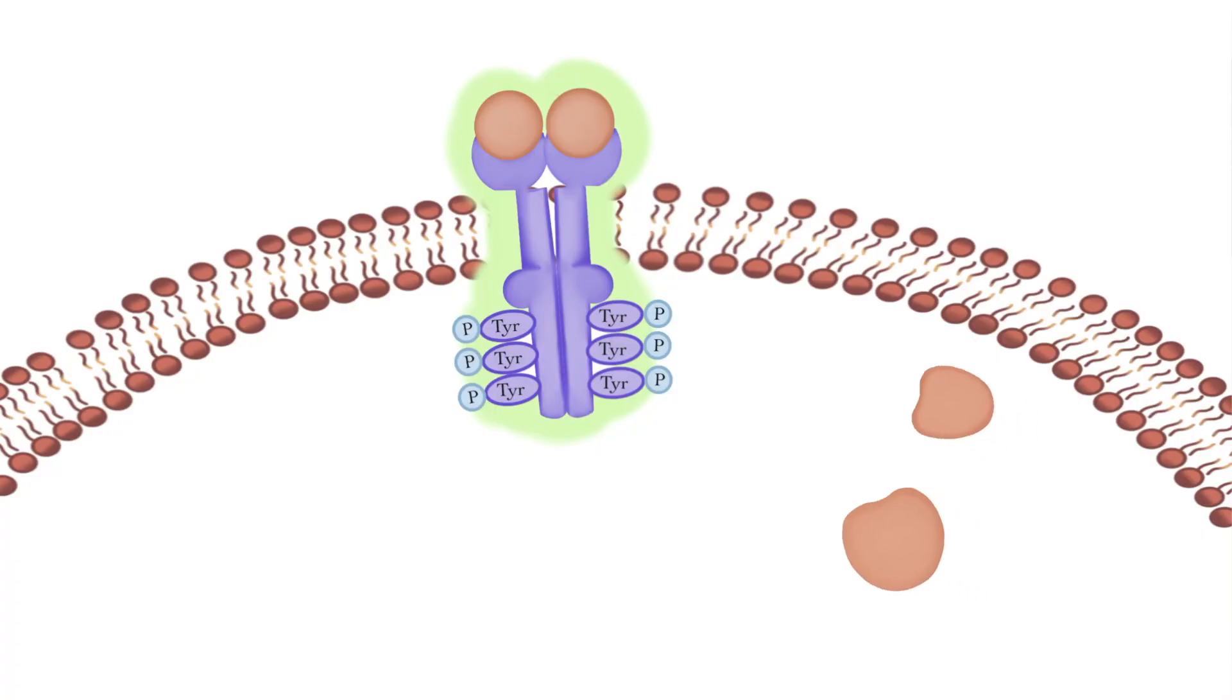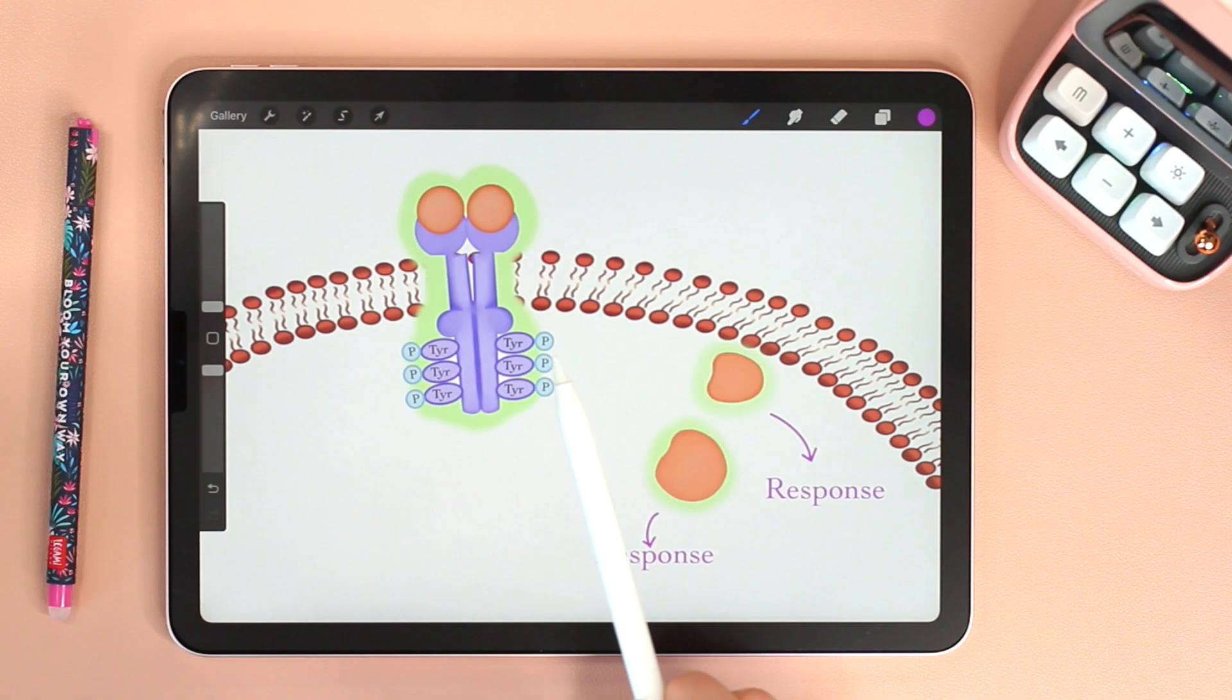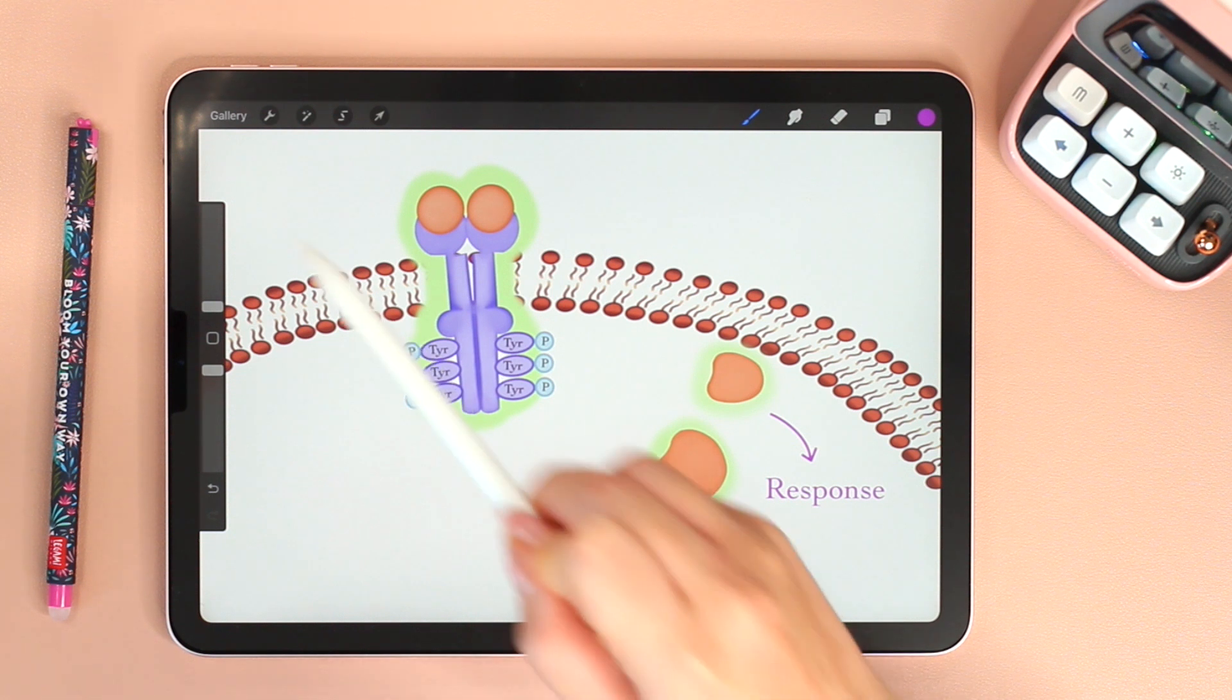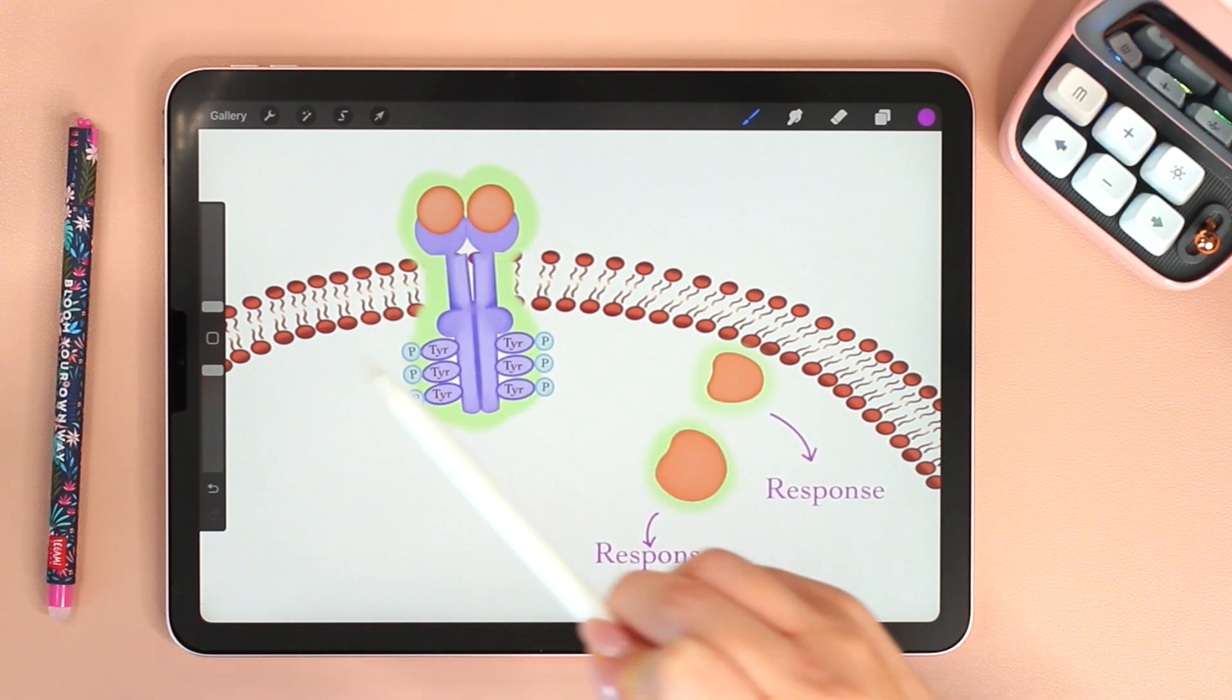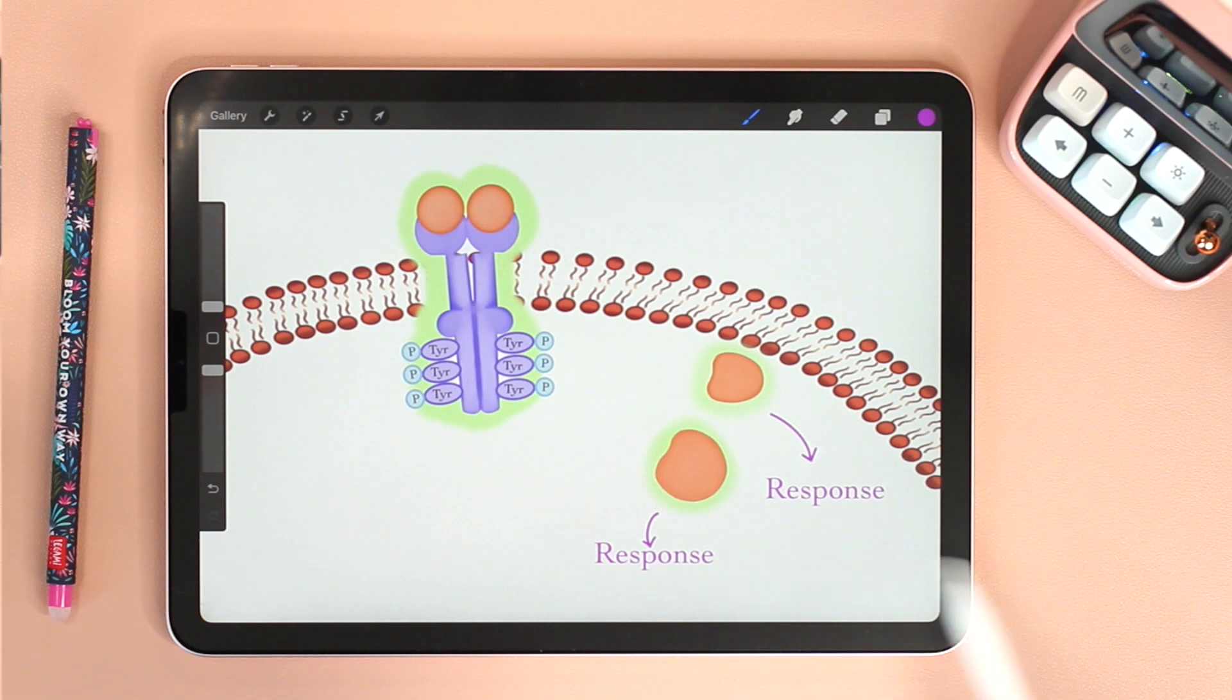Specific inactive relay proteins bind to the receptor tyrosine kinase. And when they bind, they change shape and become activated. Each activated relay protein triggers a transduction pathway, of course leading to cellular response. Unlike G protein coupled receptors, here a single ligand binding event can trigger so many pathways.